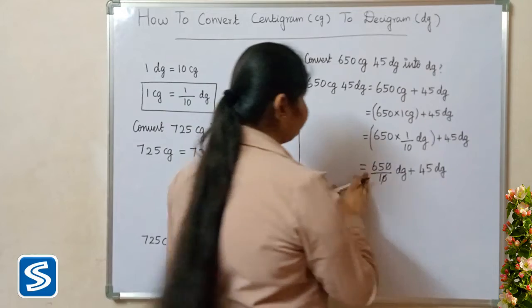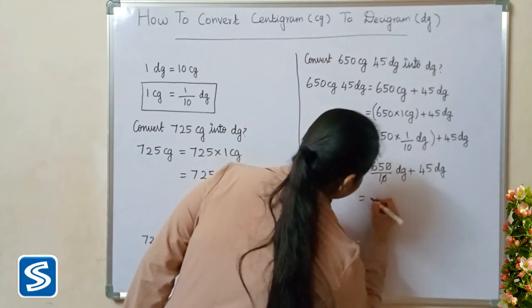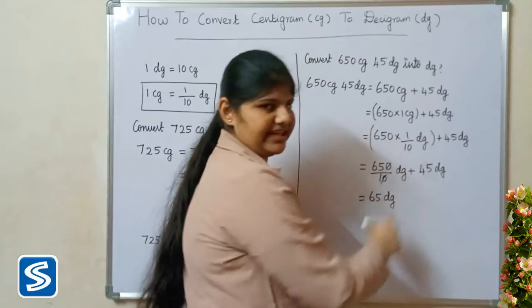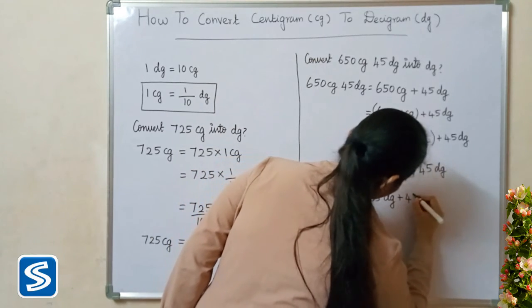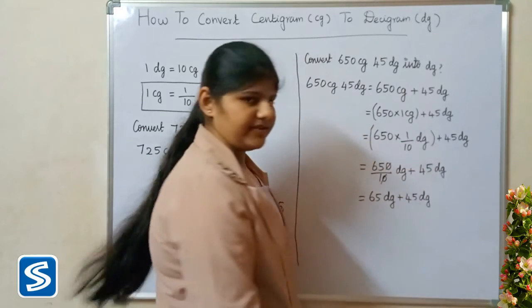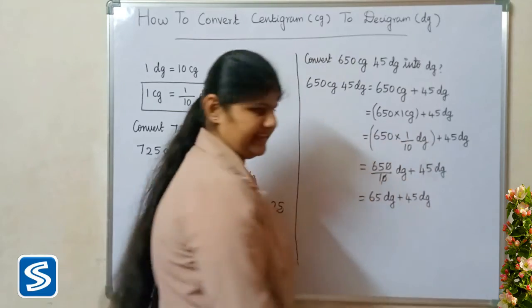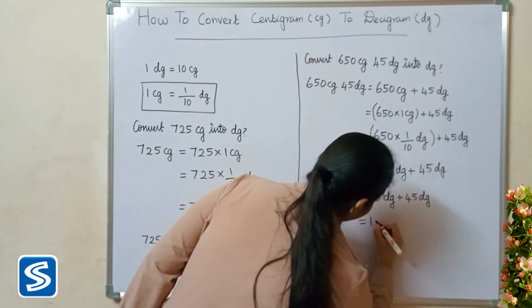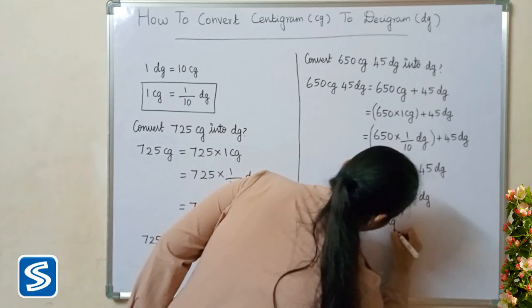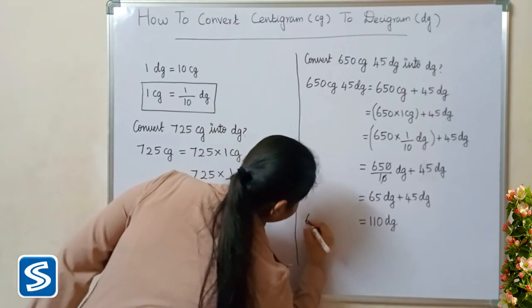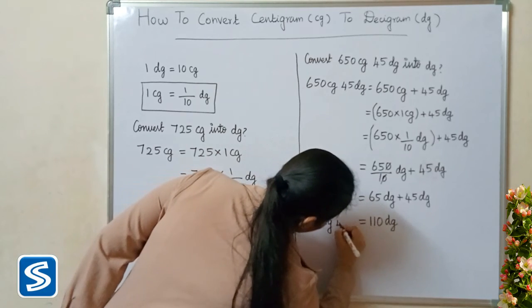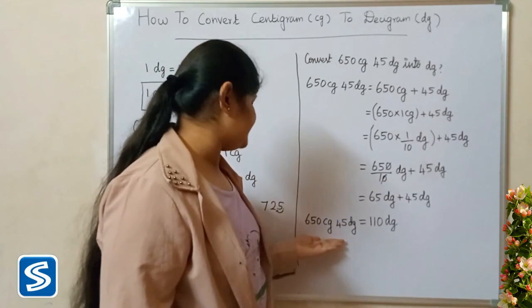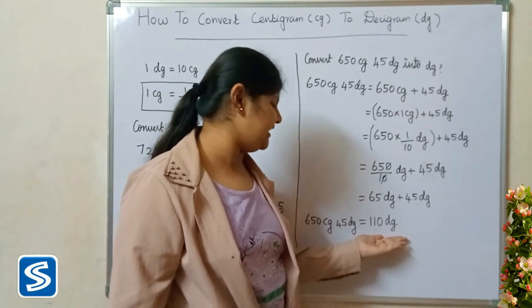0 and 0 get cancelled. So when we divide 650 by 10, our answer will be 65 decigrams. So 65 decigrams plus 45 decigrams will be 110 decigrams. So 650 centigrams plus 45 decigrams is equal to 110 decigrams.